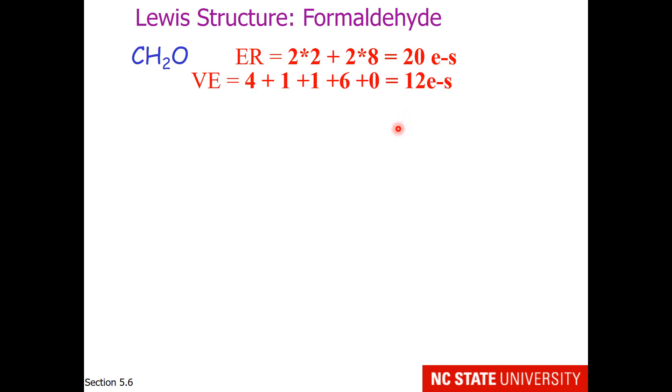The valence electrons will be 4 for carbon, 1 for each hydrogen, and 6 for oxygen to give us 12 electrons. The difference between 20 and 12 is 8 electrons.